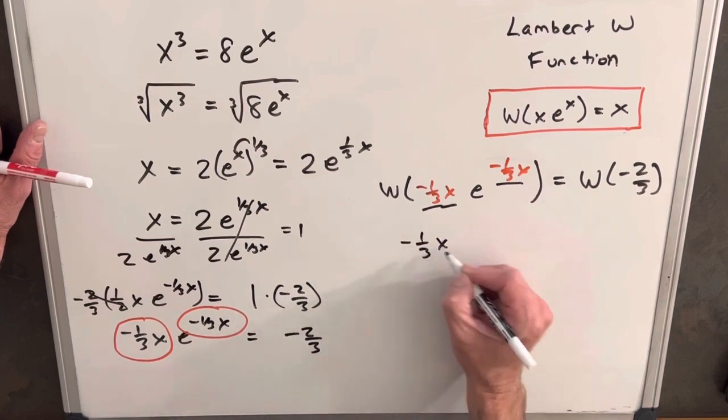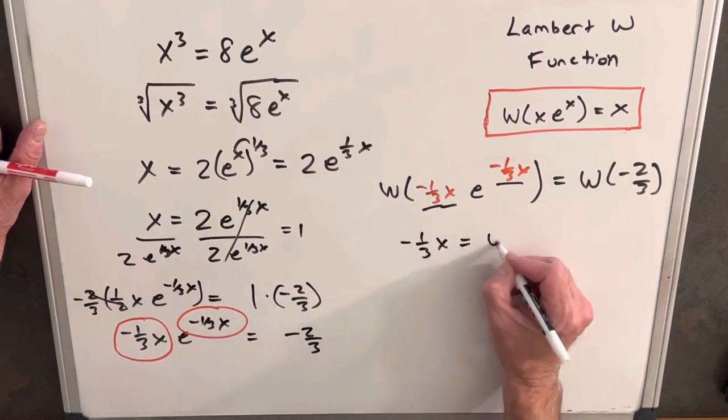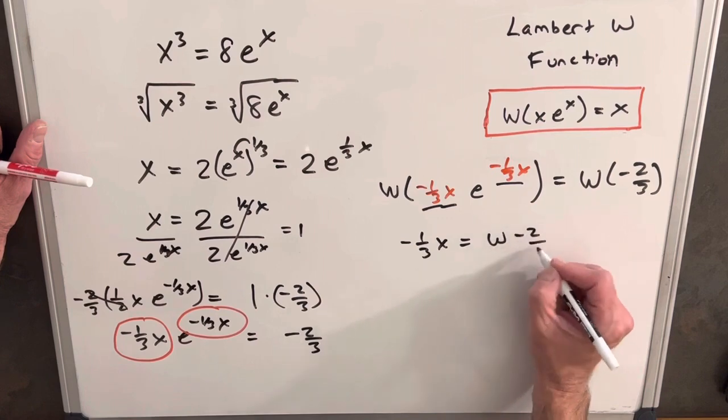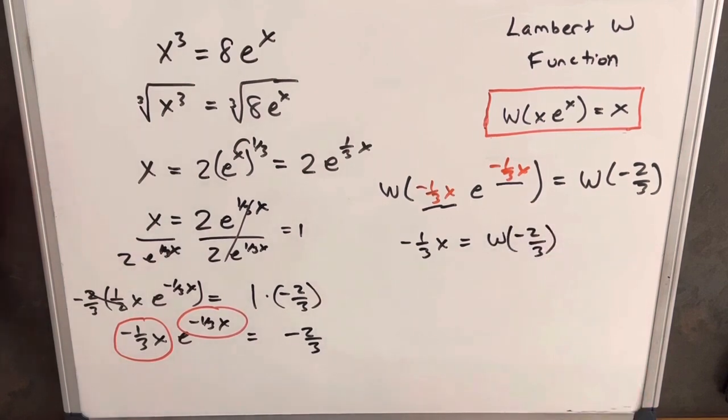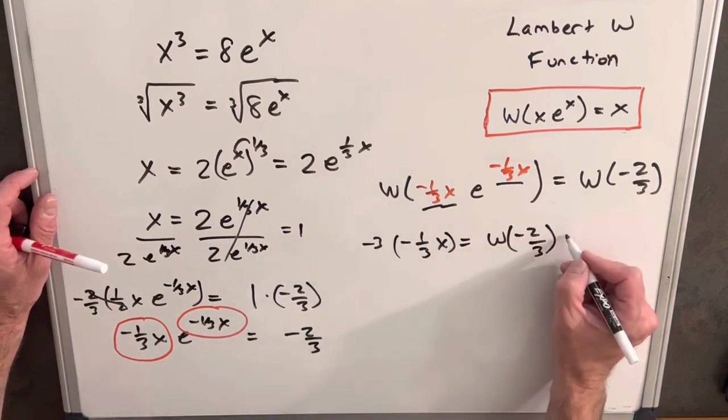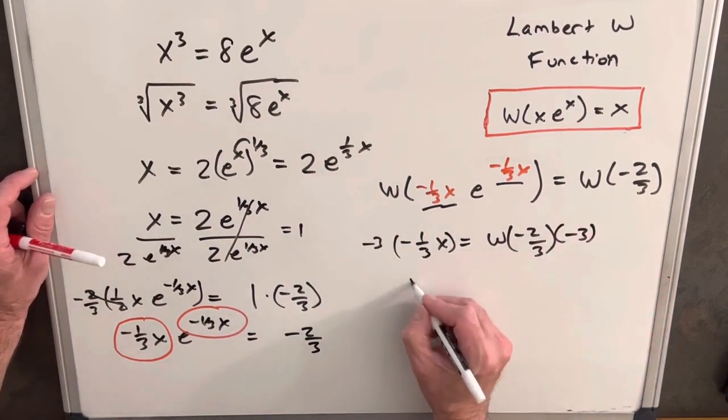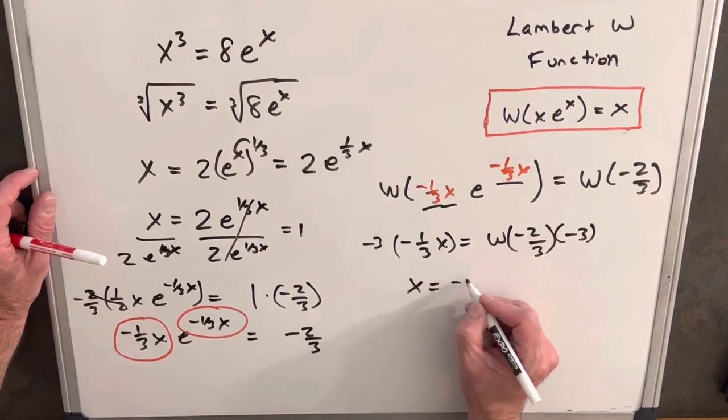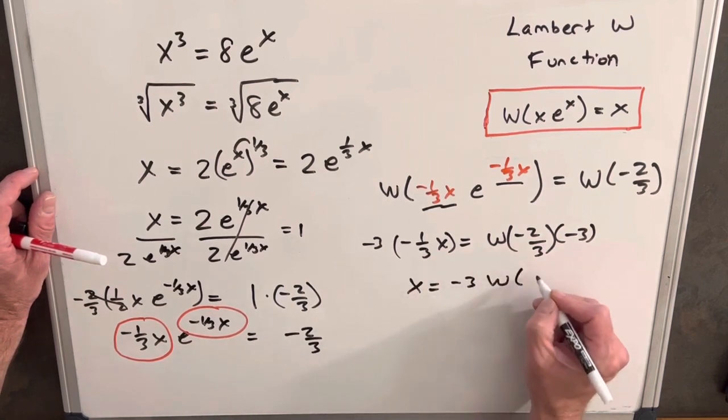This is going to be -1/3 x = W(-2/3). Then we need to multiply by -3, and we're left with x = -3W(-2/3).